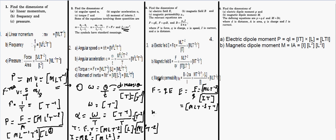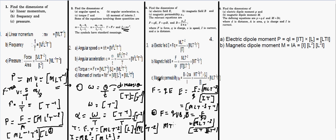For magnetic field, the force due to a magnetic field is F = qvB, so B = F/(qv). Force is MLT⁻², charge is IT, and velocity is LT⁻¹. After calculation, the dimension of magnetic field is MT⁻²I⁻¹.